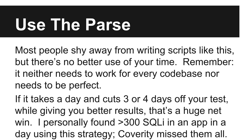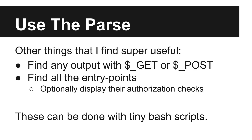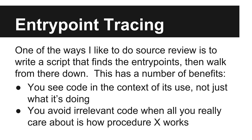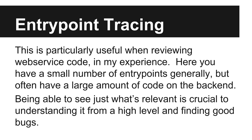It'll also often give you better results than if you did it 100% by hand. I personally found over 300 SQL injection bugs in a single day using this technique, all of which were missed by Coverity. Other things you can easily script: finding any output to a page that uses the GET or POST superglobals in PHP, and finding all the entry points — sometimes you can even find the authorization checks easily. These can both be done with simple bash scripts. One of the ways I like to do source review is to start from entry points and go up the tree from there. The two big benefits are that you see the code how it's used rather than how it could be used, and you avoid looking at irrelevant code when all you really care about is how a given entry point works. That's a particularly good approach for web service code, where you have a small number of entry points and a large backend codebase.